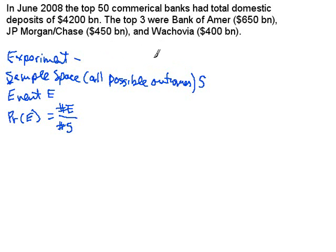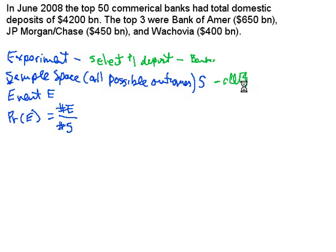Or, what percent of the domestic deposits would be held by Bank of America? The experiment would be that we randomly select a dollar of deposit, and then we want to look at what bank it's held in — identify the bank. The set of all possible outcomes is just all the banks; there are 50 of them according to this data. The event we're interested in is that the bank selected is Bank of America.